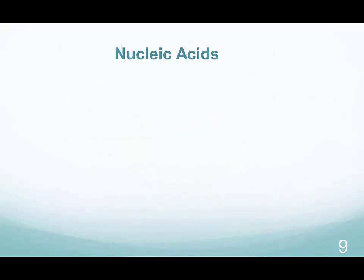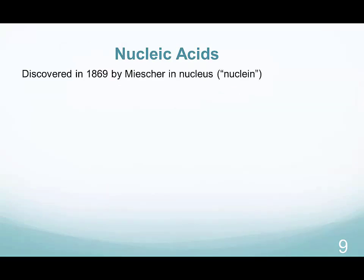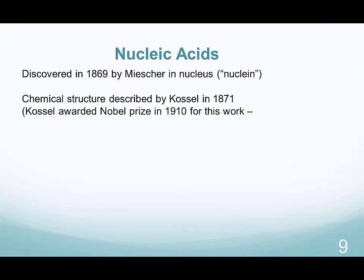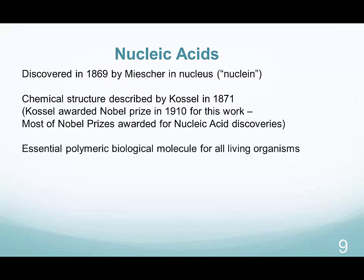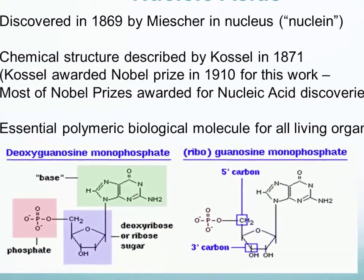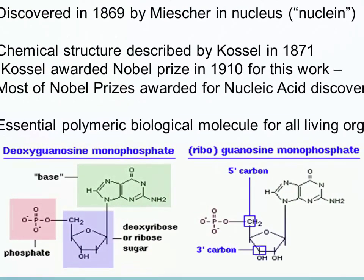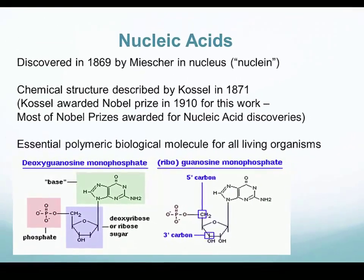The basic molecules of genetic material consist of nucleic acids or nucleotides. The molecules were discovered over a century ago in the nucleus of cells, coined as 'nuclein' at that time. The chemical structure was described in 1871 by Kossel, who was awarded the Nobel Prize for the discovery in 1910. Most of the Nobel Prizes in biology and medicine were awarded for discoveries related to nucleic acids. These are essential molecules of a living organism consisting of two main types: deoxy and ribosugar monophosphates, the main difference between them being the sugar moiety.